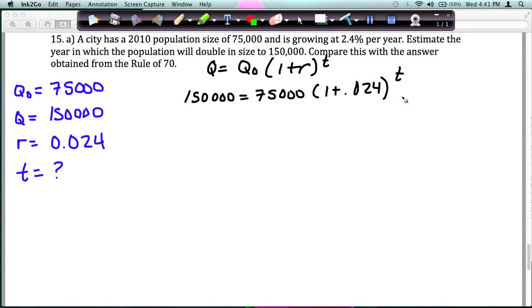Okay, inside the parentheses, I can add 1 plus 0.024, and you get 1.024.